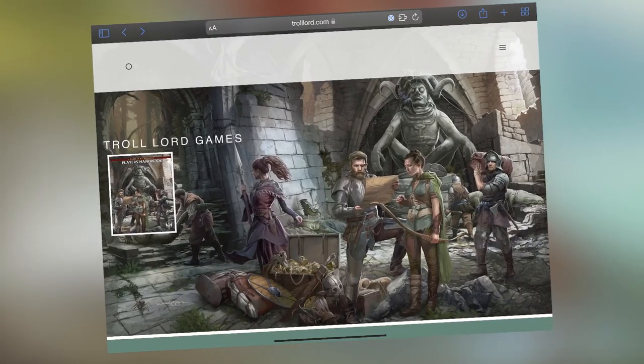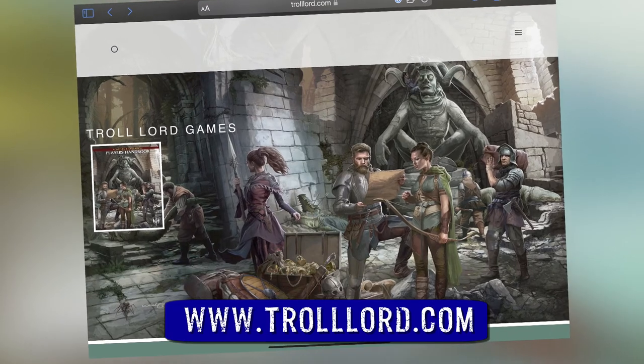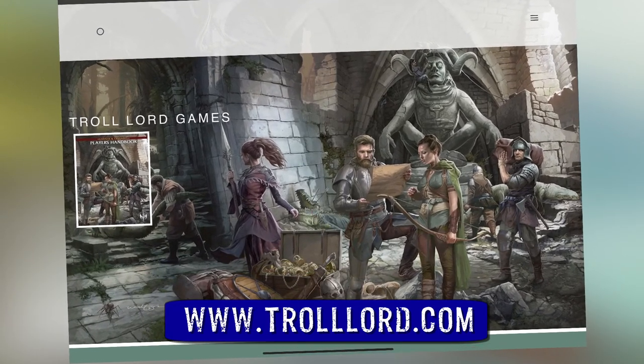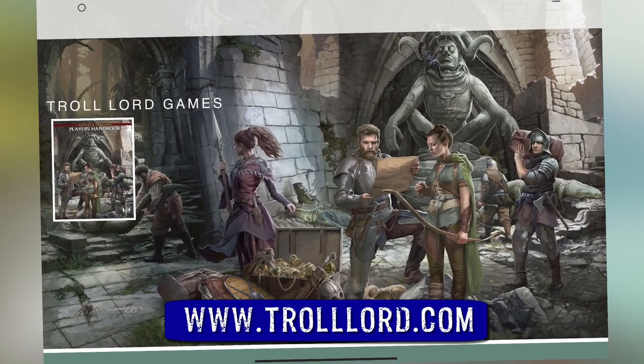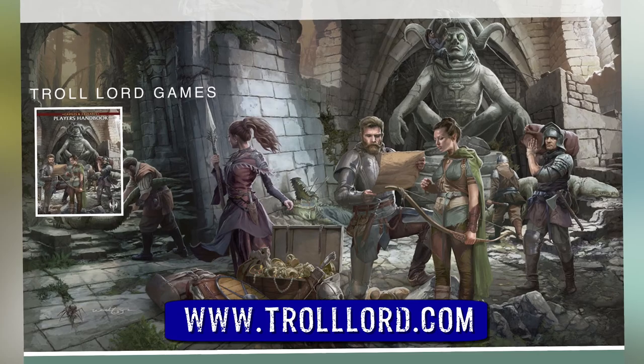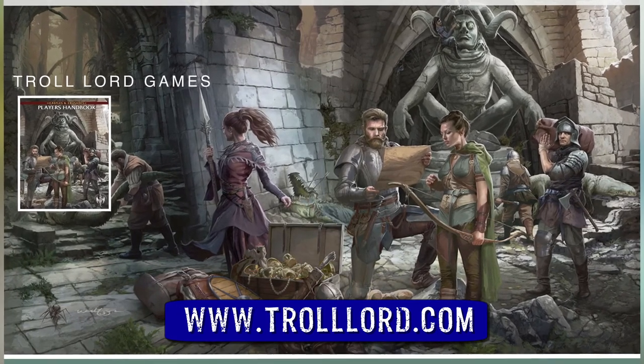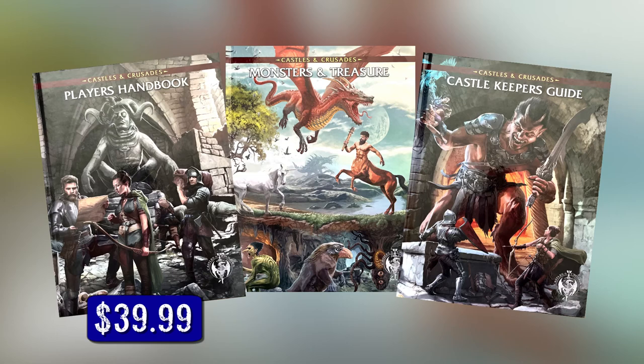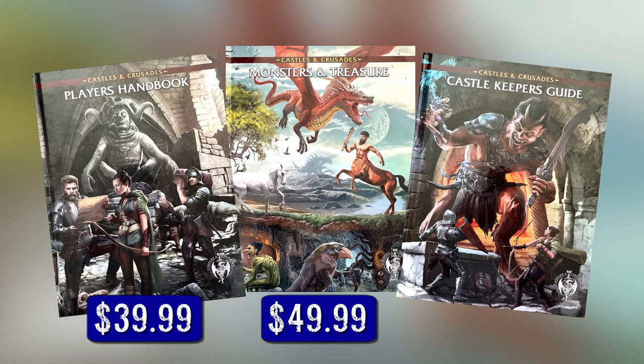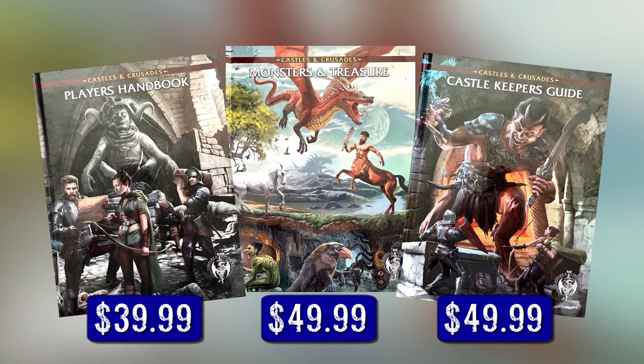If you would like to purchase Castles and Crusades for yourself, the books are available at Trollord.com. They're also available at Amazon, but it's nice to pay direct because you get the creators all the money instead of giving Amazon a cut. Or you can just go to your friendly local gaming store and have them order it for you. If you would like to get the player's handbook, the current printing is listed at $39.99. The Monsters and Treasures book is $49.99, and the Castle Keeper's Guide, which is the largest of the three, is also listed at $49.99. If you are just looking for the PDFs, you can get them at DriveThruRPG. They are $19.99 apiece.